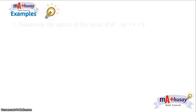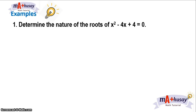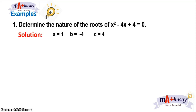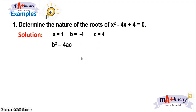Let's take these examples. Number one: determine the nature of the roots of x² − 4x + 4 = 0. We have to identify the values of a, b, and c. In this case, a = 1, b = −4, and c = 4. Now, we will substitute these values into the discriminant b² − 4ac.